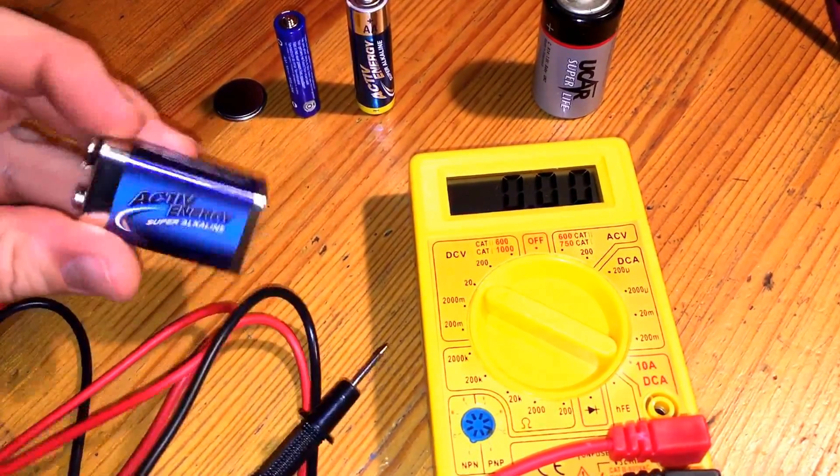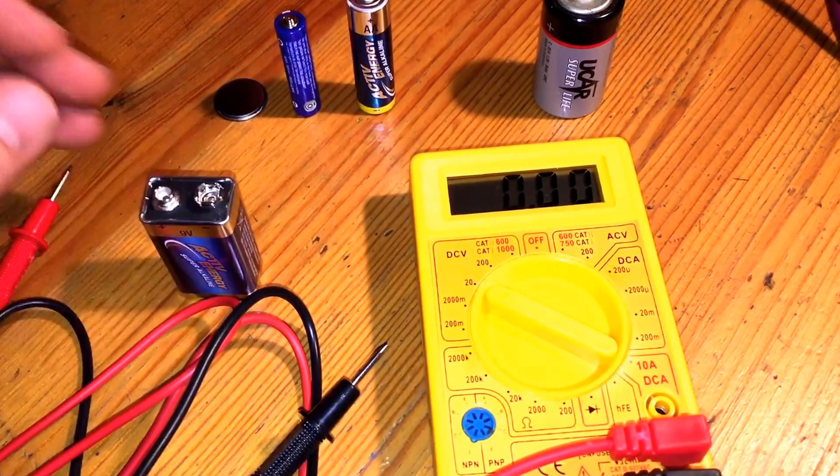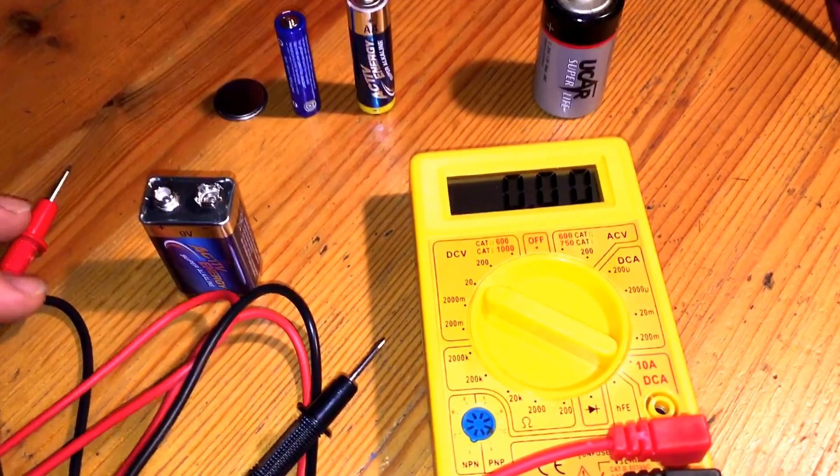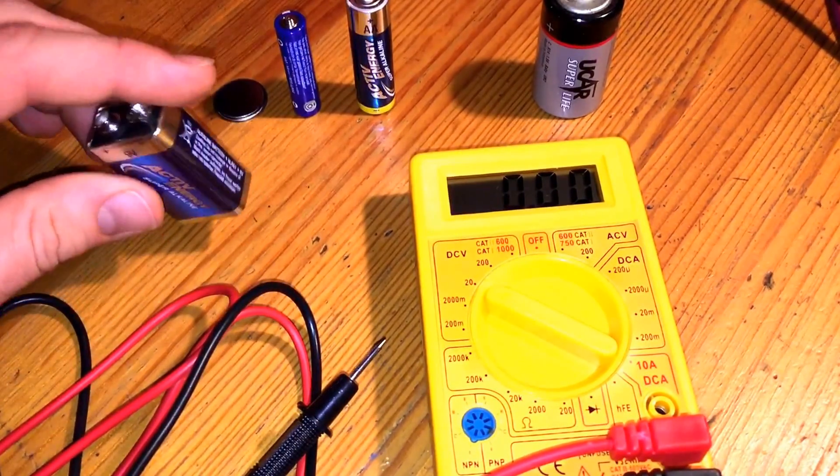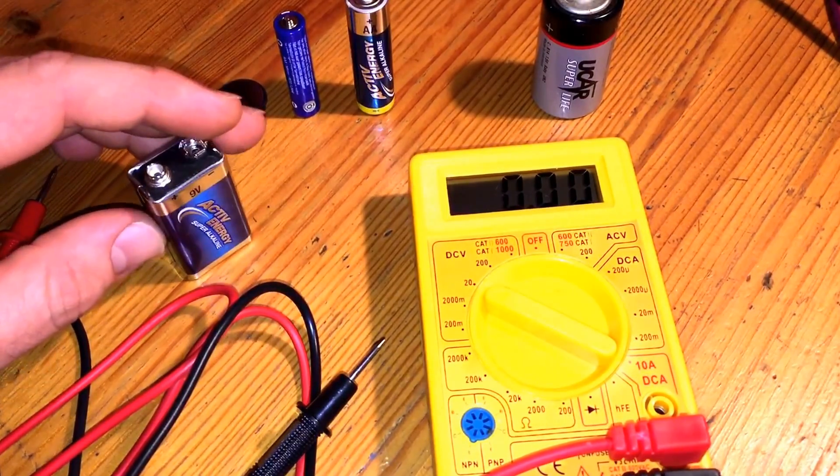The voltage is higher than 8.5, it's full. 7 to 8.5, this is nearly full. And under 6.5, it's nearly empty.